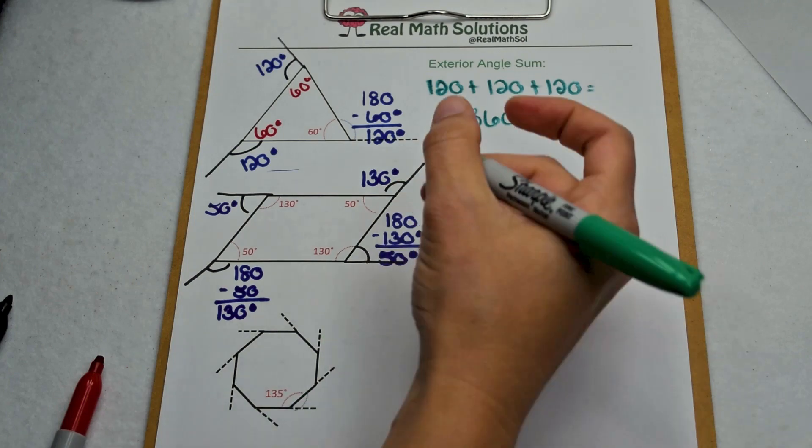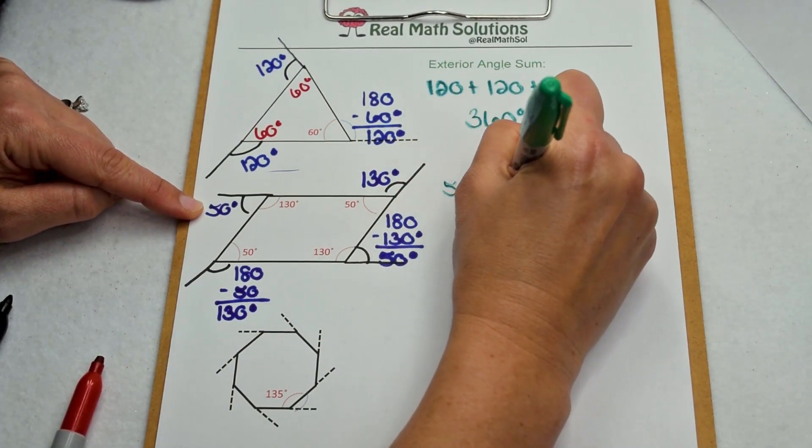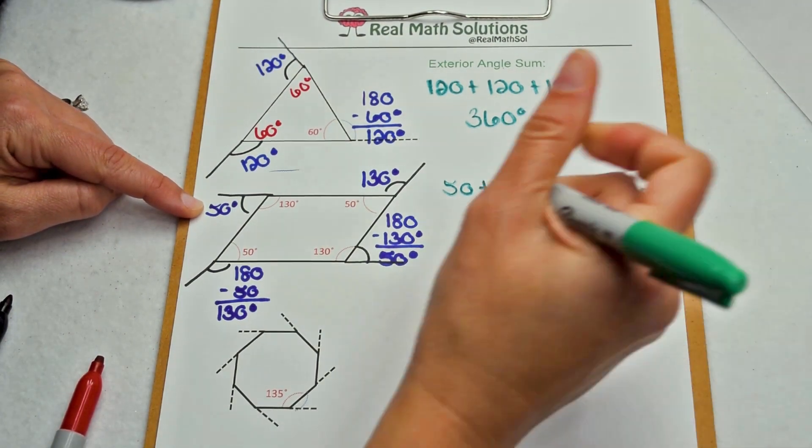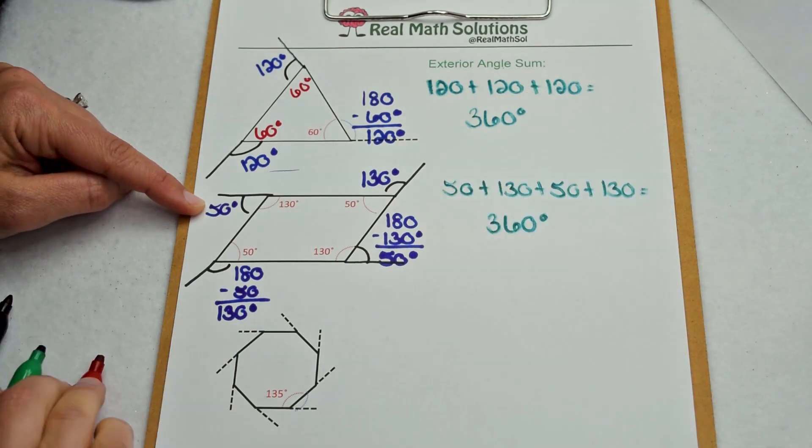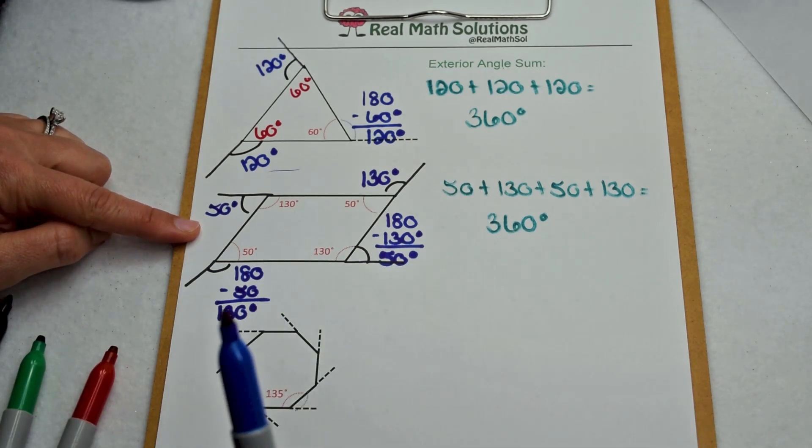So now I can find the exterior angle sum by adding those together. I have 50 plus 130 plus 50 plus 130. When we add those up, again, we come up with an exterior angle sum of 360. Well, is that a coincidence that both of these are the same? Or are we starting to develop a pattern?